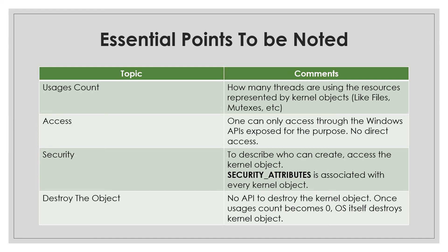Suppose there are three processes using a single kernel object — for example, a file. Once all the processes are done accessing the file, the usage count becomes zero. When one process stops, the count drops to two; when another finishes, it drops to one; and when the last process is done, the usage count becomes zero and the operating system itself destroys the kernel object.